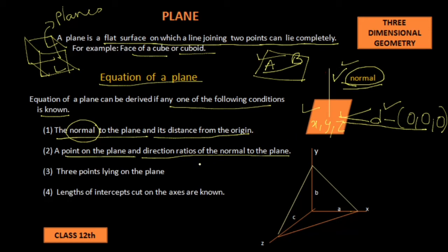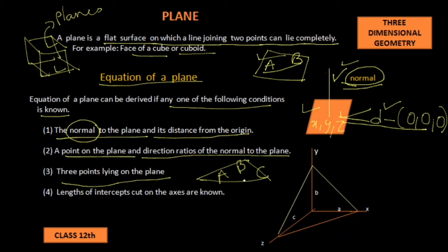Now condition number 3: three points lying on the plane are known. Suppose we have a plane and three points A, B, and C on the plane are known — the coordinates of these three points are known. Then we can find the equation of the plane.